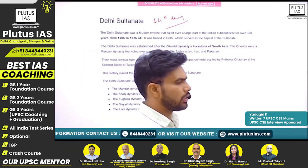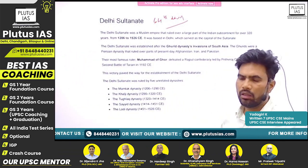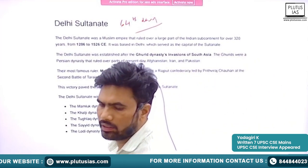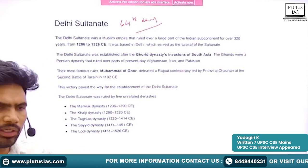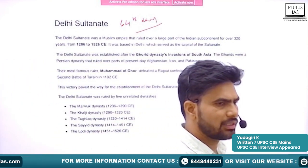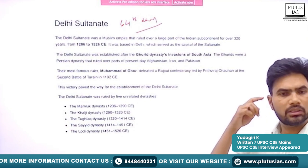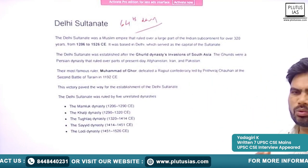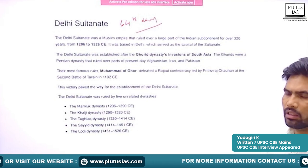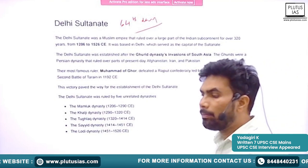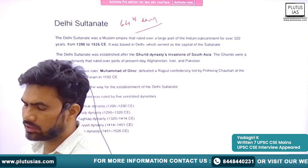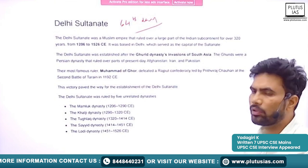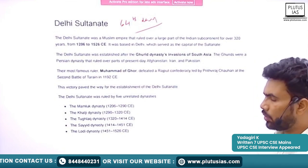In the medieval period, I am covering only two topics, because the number of questions being asked from medieval India have been reduced. If you see the previous years, since six or seven years, the questions have been reduced somewhat. Comparatively, the number of questions are being reduced, so mostly I am focusing on the important topics, on the chronology. I am going forward with the chronology of the rulers.